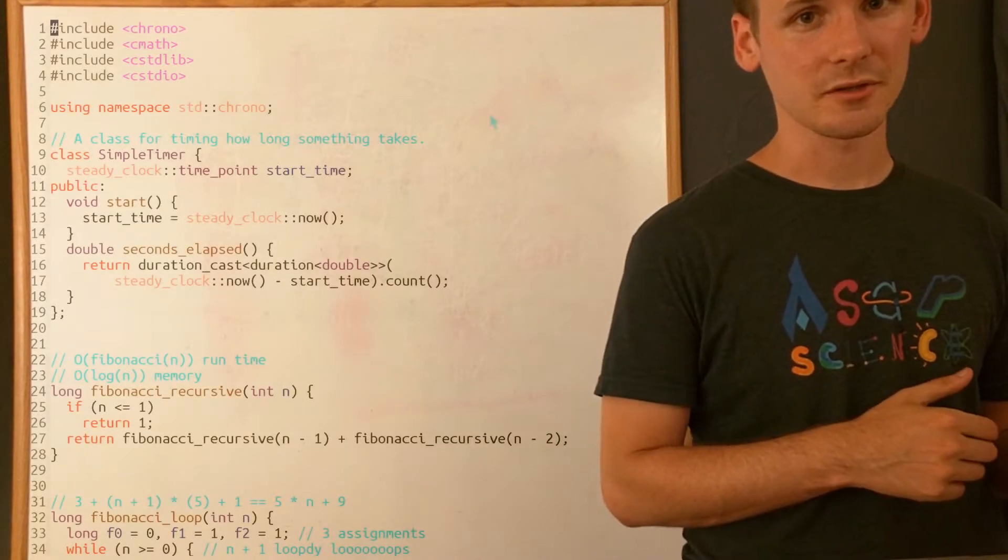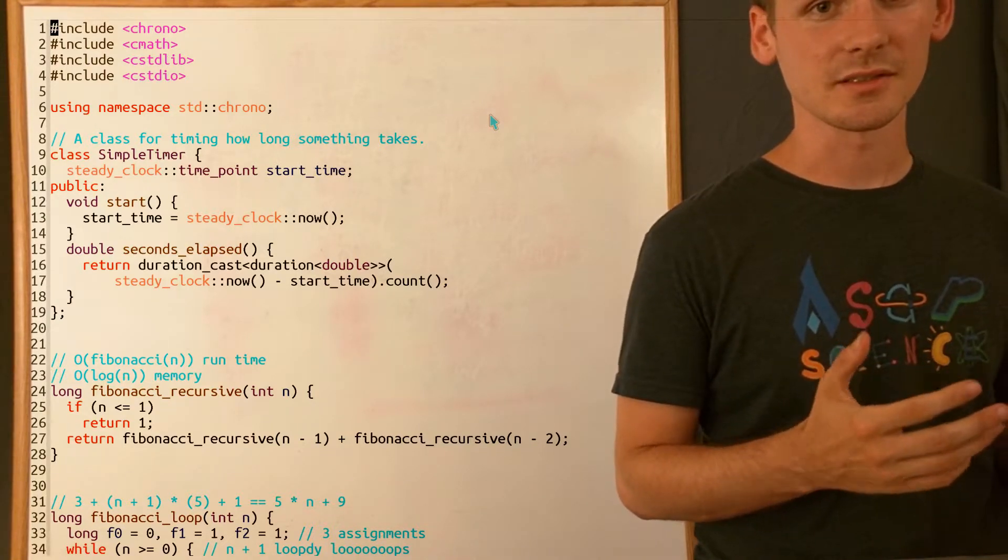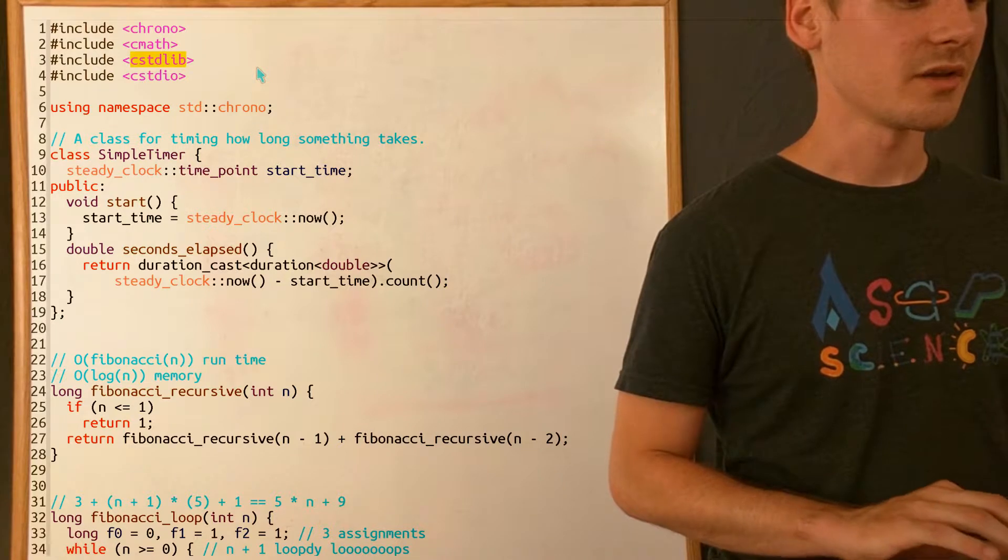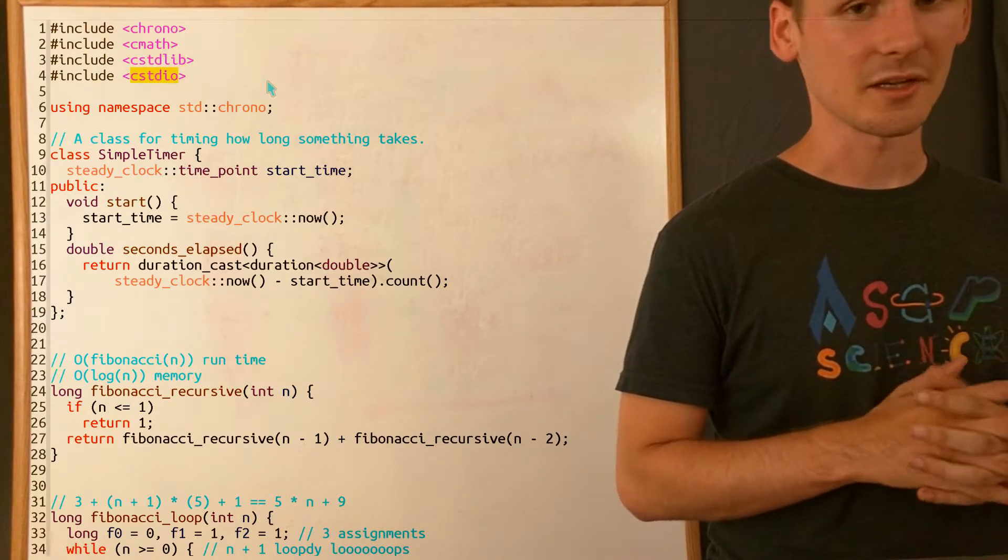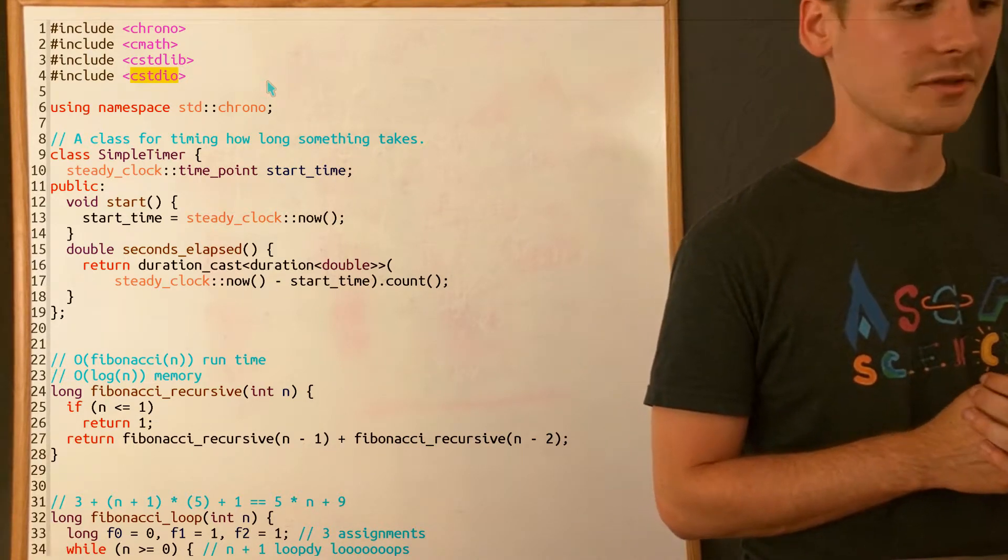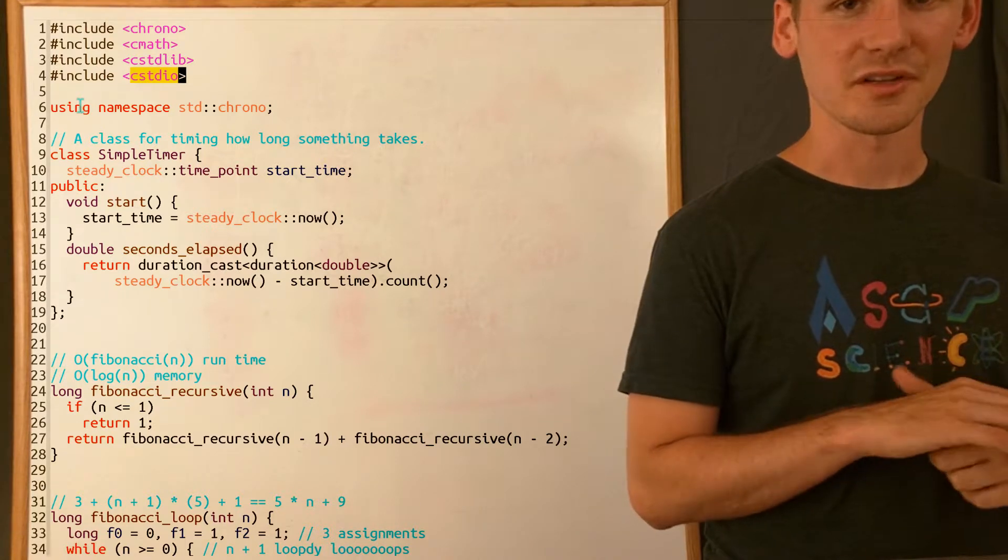So now I'm going to walk through this code section by section. First we have the includes to include things like C++'s time library called Crono, a library for math, doing basic operations like parsing numbers, and then C's standard in and standard output. We could use Iostream, but I like the formatting of printf better.